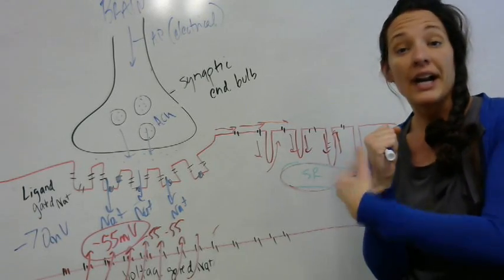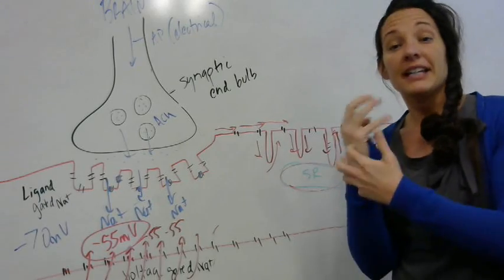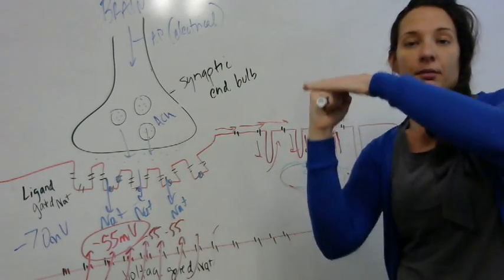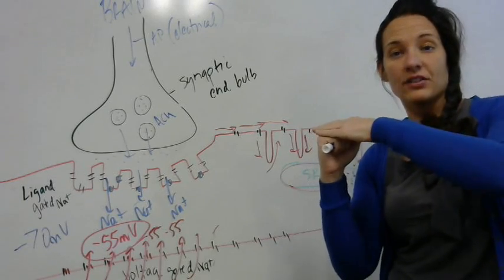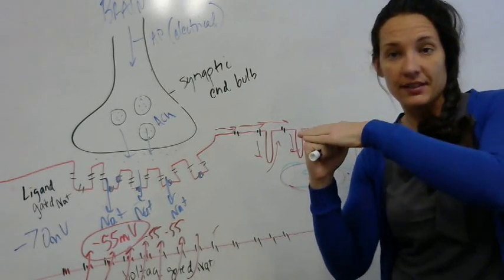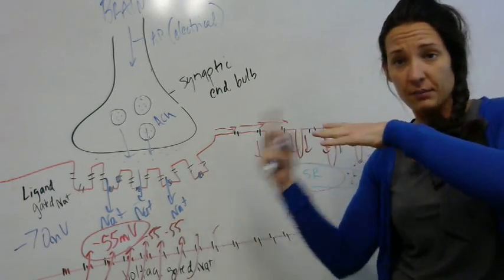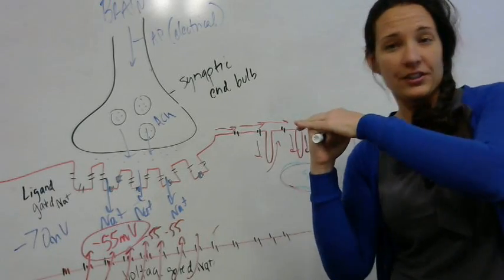Myosin is able to go up there and bind to actin. Once that is done, that is called cross-bridge formation. That's the second step. So ATP hydrolysis is number one, the second thing is cross-bridge, that's just simply attachment.